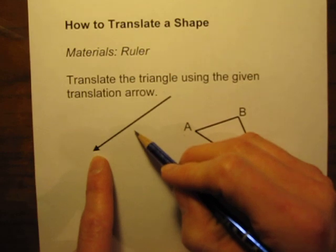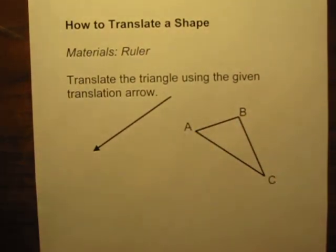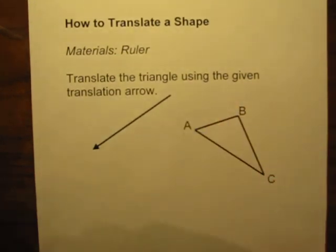So a short arrow means the object will move a short distance, and the longer the arrow is, the greater the distance traveled. And obviously the direction the arrow shows which way it's going to go as well.